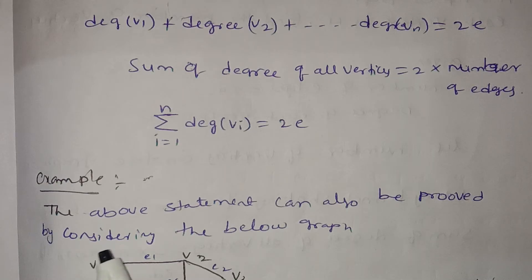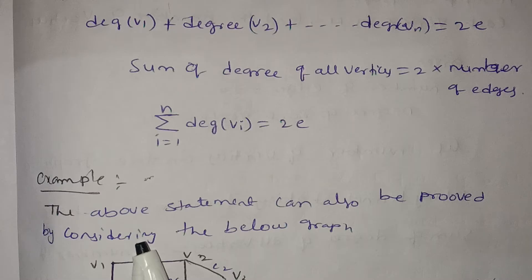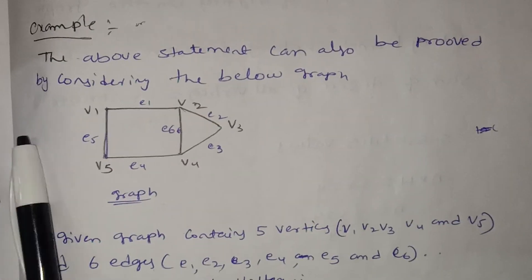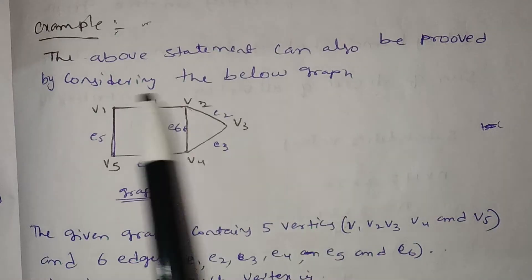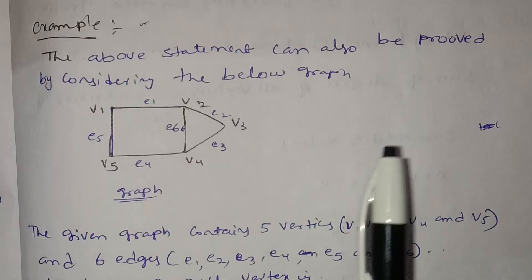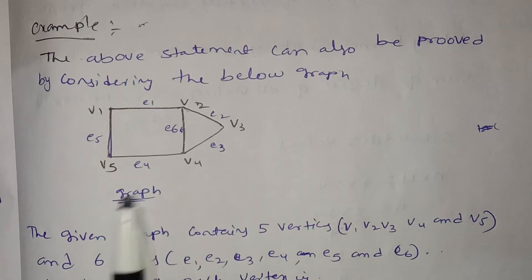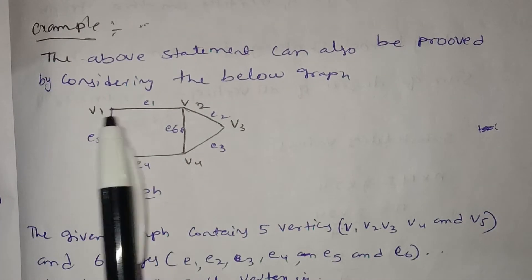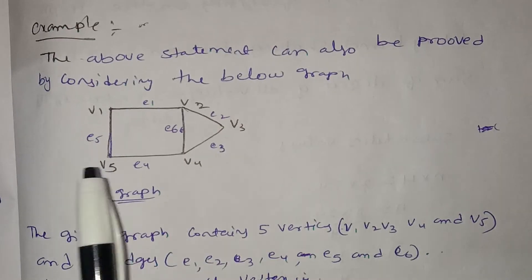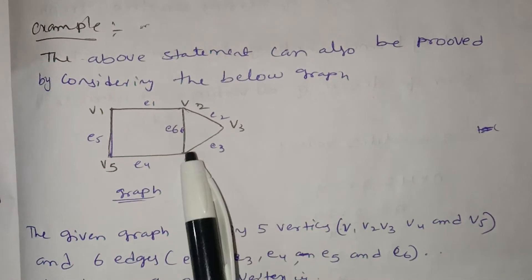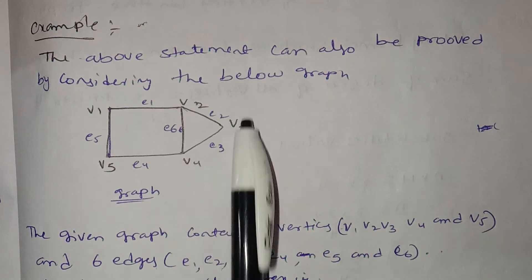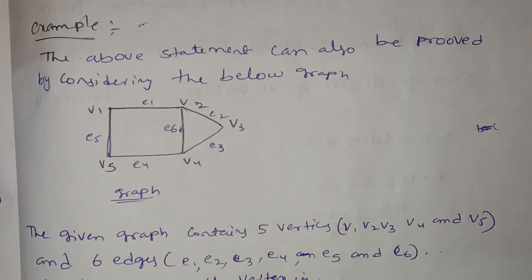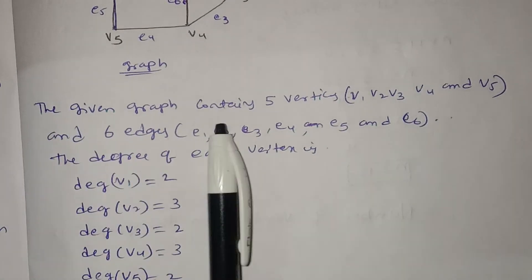You can find JNTUH updates and previous papers via the link in the description. The above statement can also be proved using the below graph. We have a graph with 5 vertices and 6 edges.